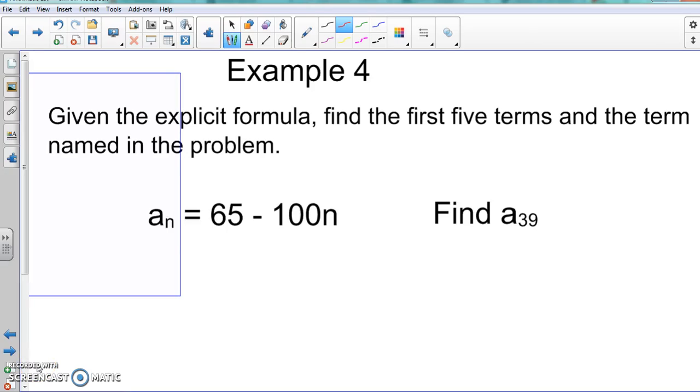Alright, so let's go more in depth with the explicit formula. And the bell is going to ring again, so if you hear the bell, that's okay. We're going to keep on going. So here, given the explicit formula, we're going to find the first five terms and the term that is asked for in this problem. So we're going to find the first five terms and then we're going to find a₃₉.